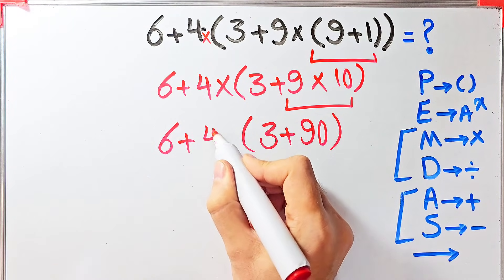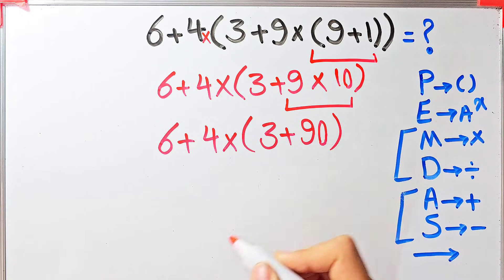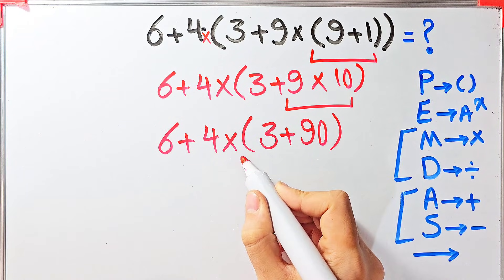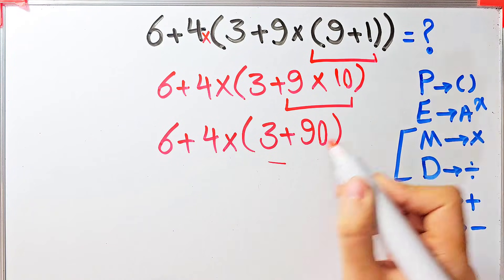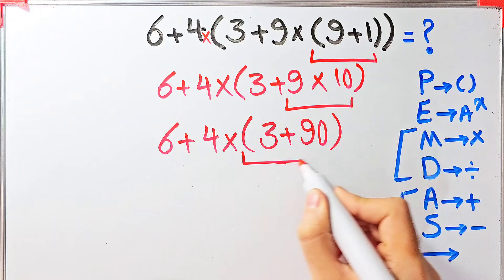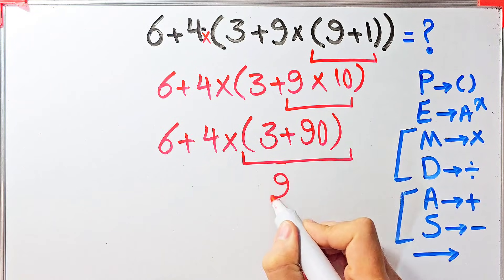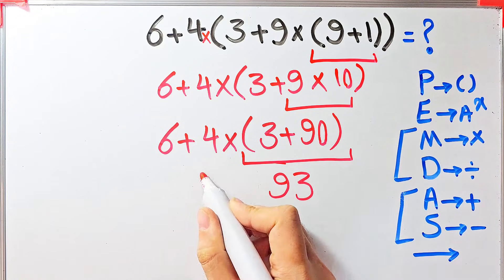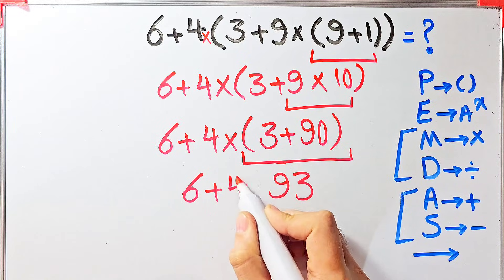Now we have 3 plus 90 inside the parentheses, and the question is 6 plus 4 then times 3 plus 90. Again we simplify the parentheses: 3 plus 90 equals 93. Now we have 6 plus 4 then times 93.